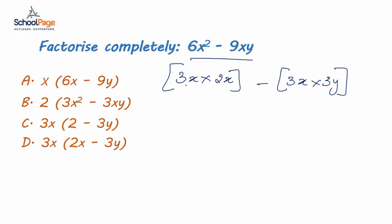Observe that 3x is the greatest common factor on both the sides. Now that we have identified the greatest common factor as 3x.